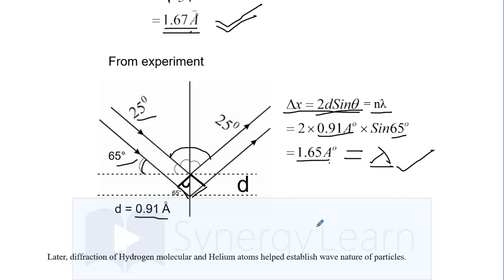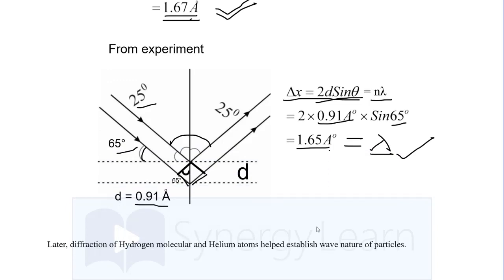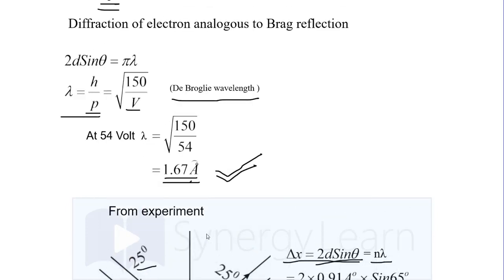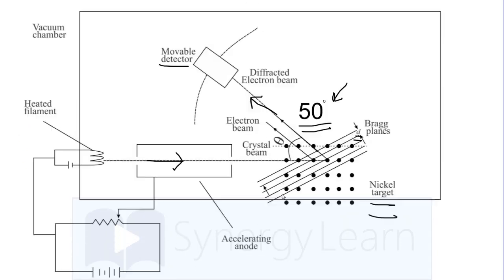This was a successful experiment of establishing wave nature of electrons. Later, diffraction of hydrogen molecules and helium atoms also established wave nature of particles, and dual nature gained popularity that all particles show dual nature given by lambda equals h by p.